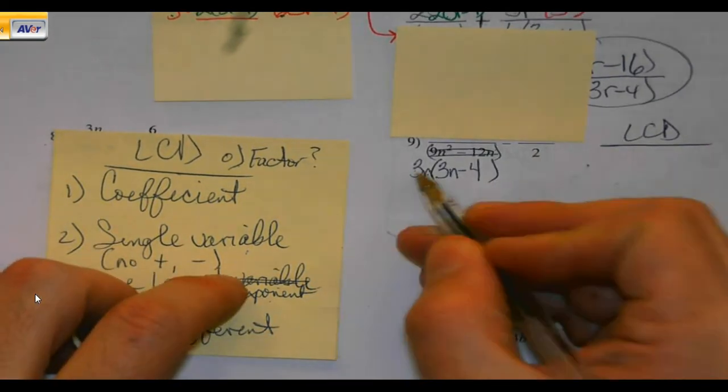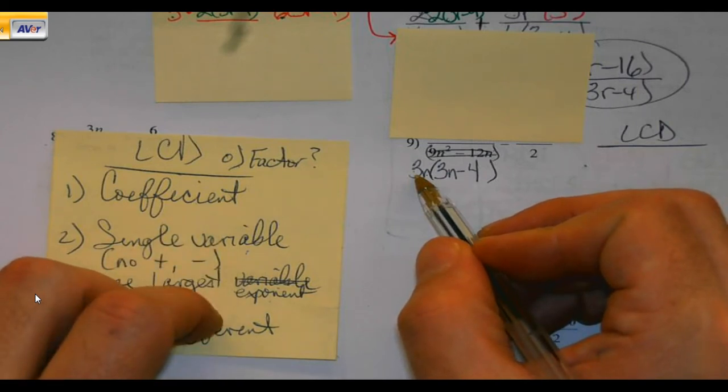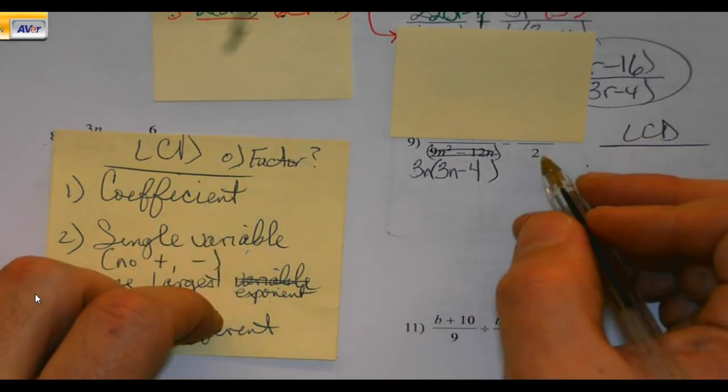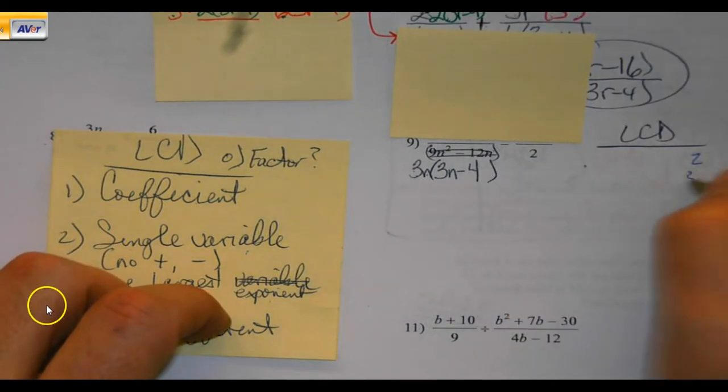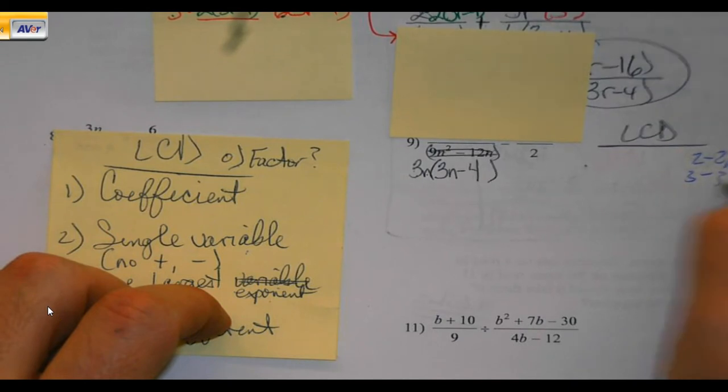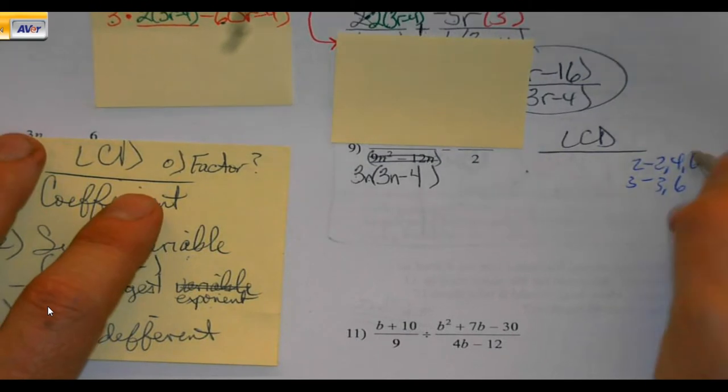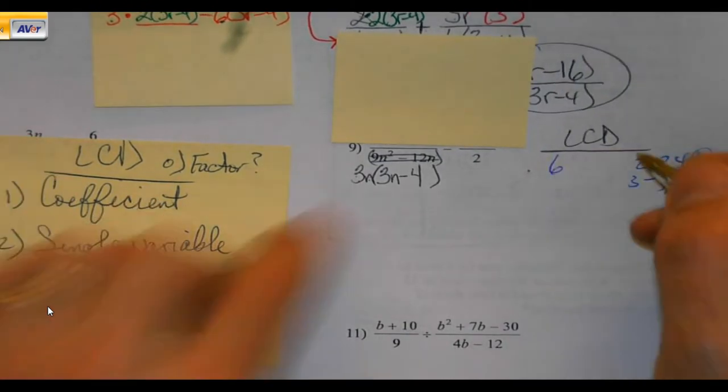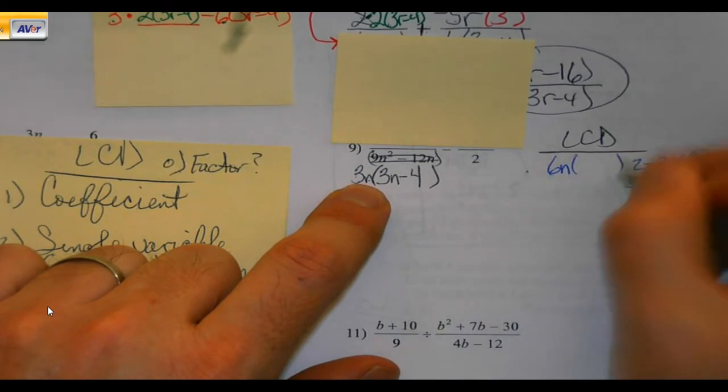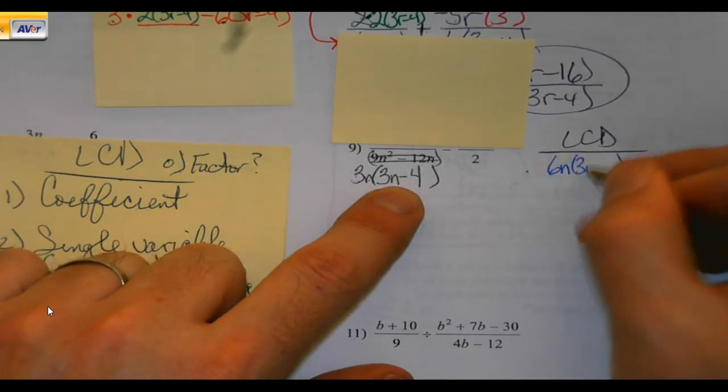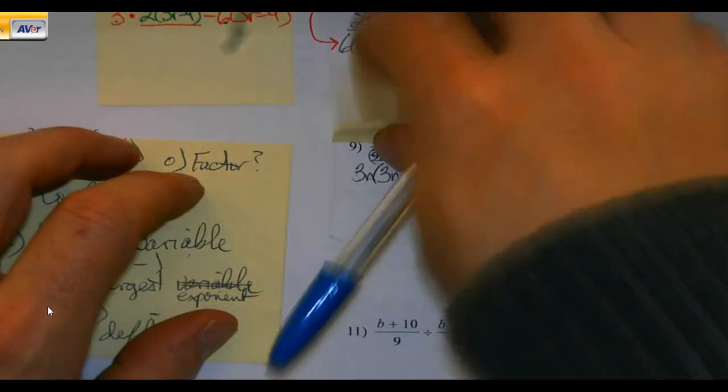What is my LCD going to be? Coefficients 2 and 3, we're going to assume we know that's going to be 6. I do have a single variable here that needs to be included. And I've got a set of parentheses. So, all of those would need to be included in my LCD.